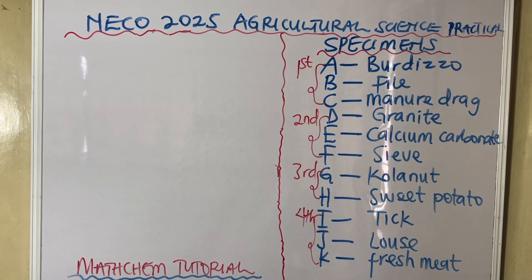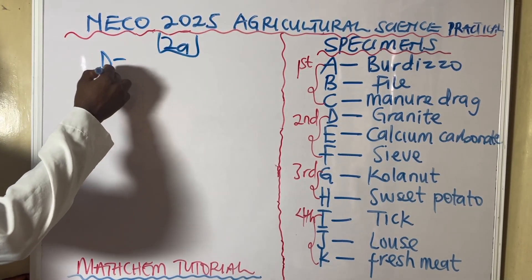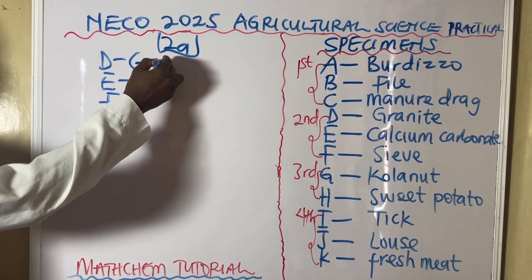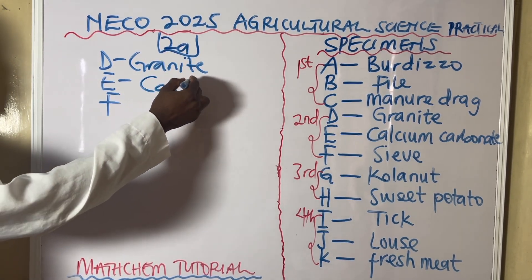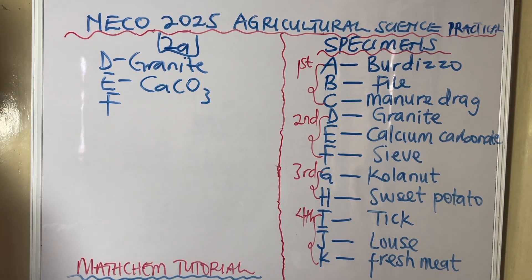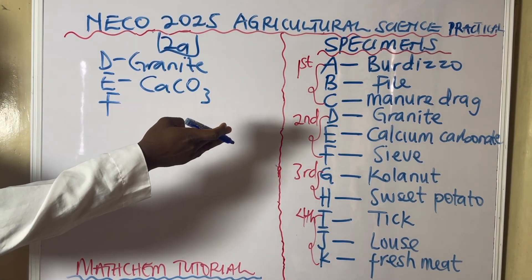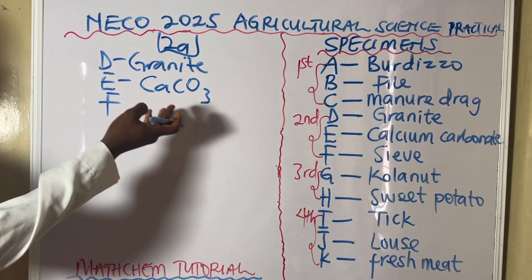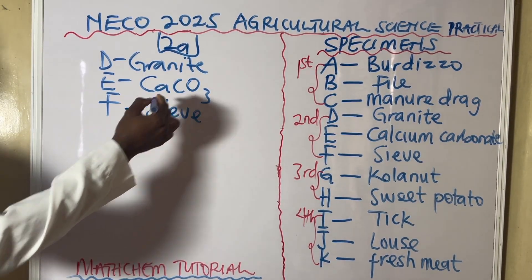A possible question in this second category is to identify specimens D, E, and F. Specimen D is granite. Specimen E is limestone, also known as calcium carbonate (CaCO₃). Specimen F is a sieve.